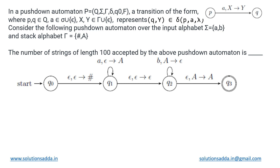This is a TOC question from pushdown automata. We have been given a PDA defined using the standard definition. A transition defined this way states that if we are currently in states p and q, and we read symbol 'a' with top of stack 'x', then the top of the stack will change from x to y. That is how transitions are defined. In the usual notation, on reading 'a', if the top of the stack is currently x, it would be modified to y.